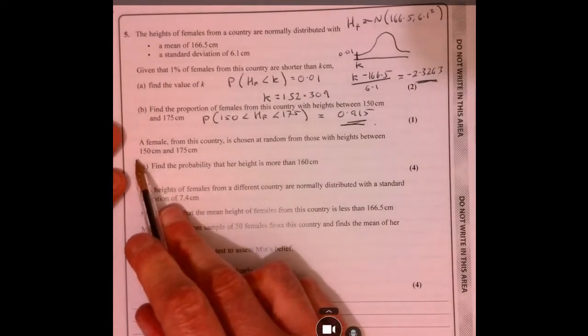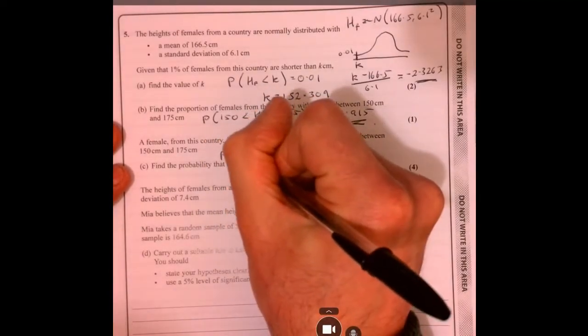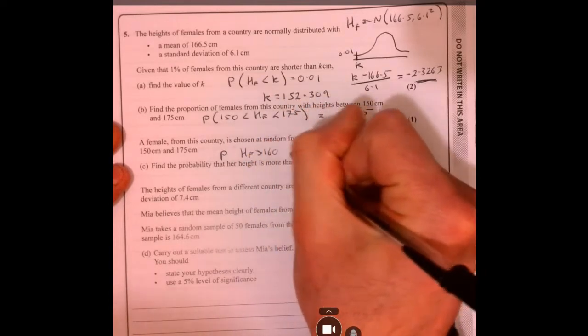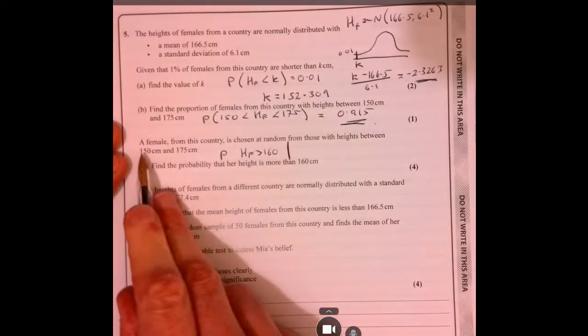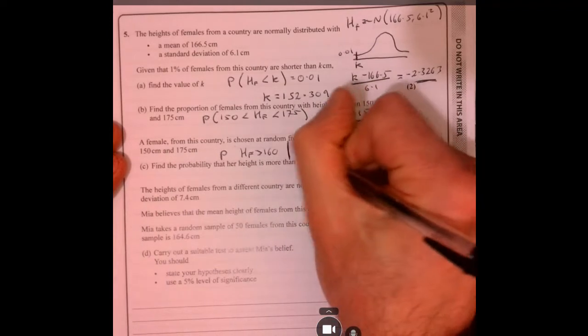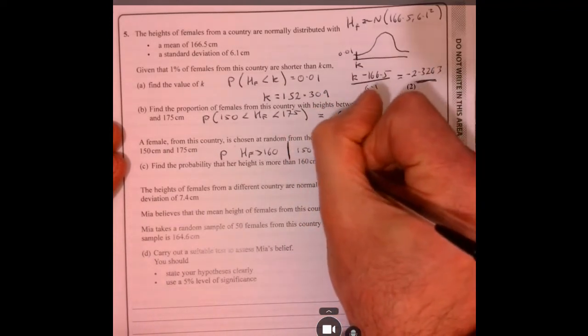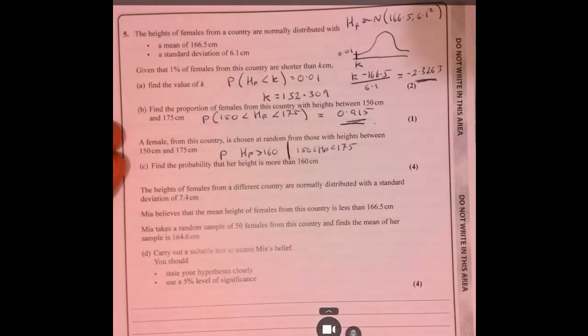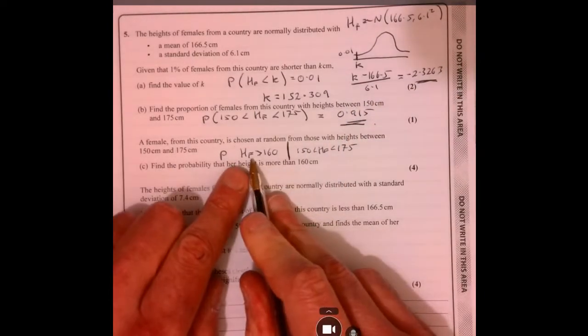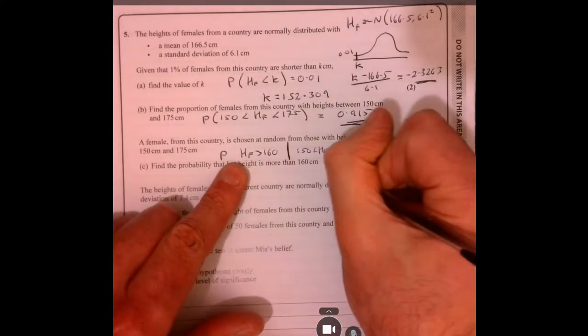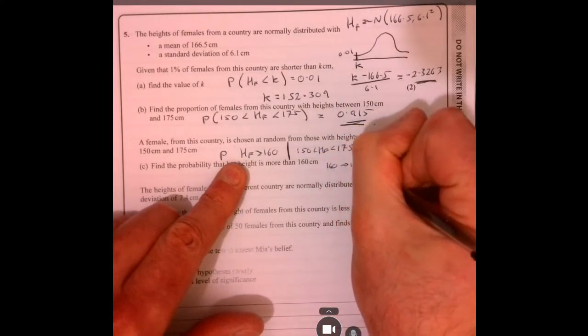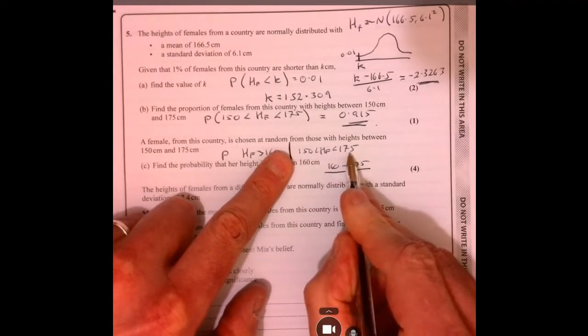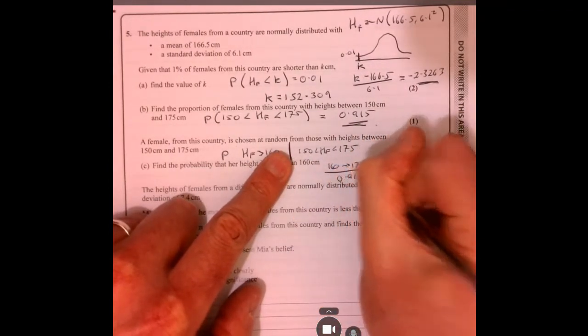Part C, a little bit more complicated. Now what we're trying to work out is the probability that the height is more than 160 given that this person is between 150 and 175. So to work this out, it's going to be 160 to 175 divided by this figure, which we've already got, 0.915.